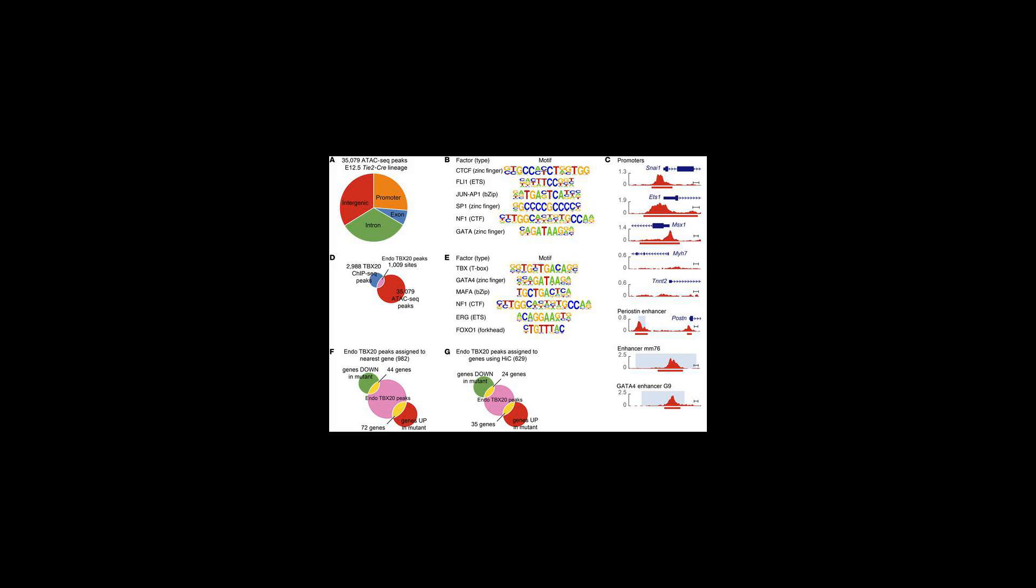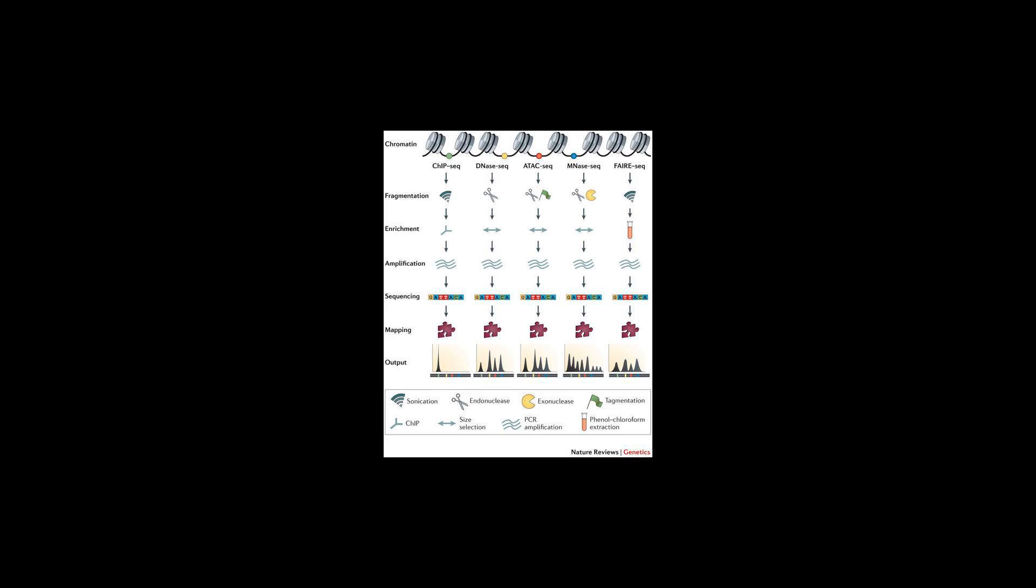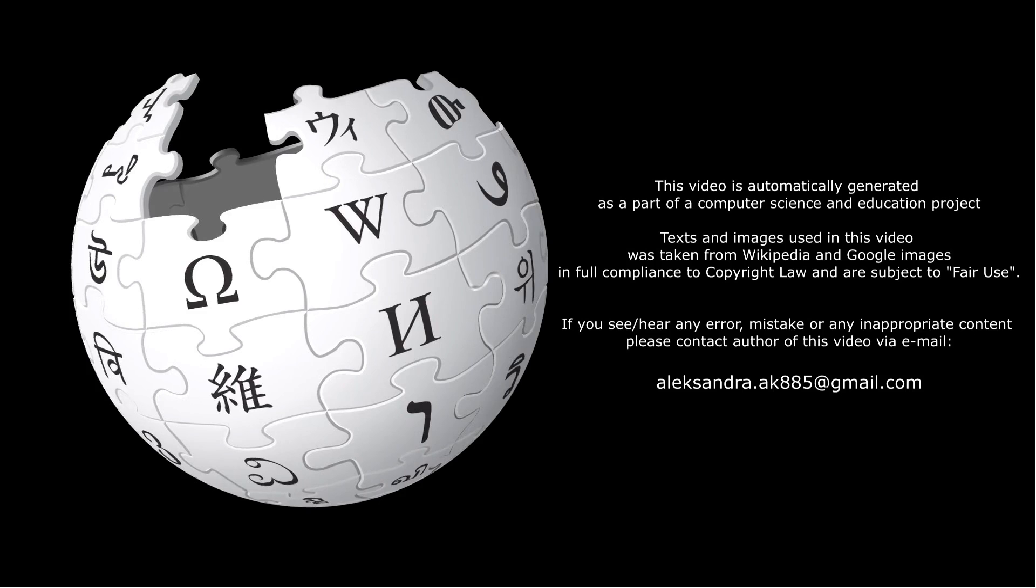One can then assign a cut count for each genomic position and create a signal with base pair resolution. Regions of the genome where DNA was accessible during the experiment will contain significantly more sequencing reads, since that is where the transposase preferentially acts and forms peaks in the ATAC-SEQ signal that are detectable with peak calling tools.